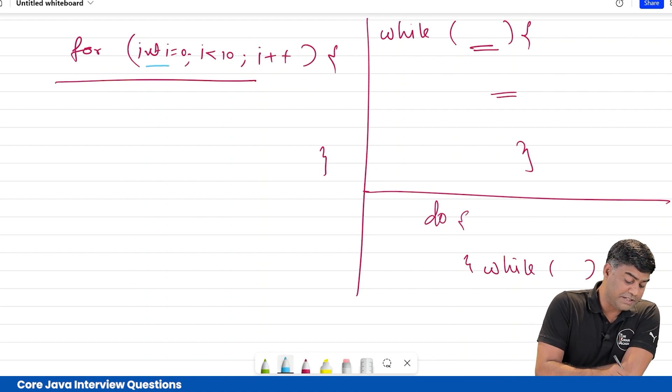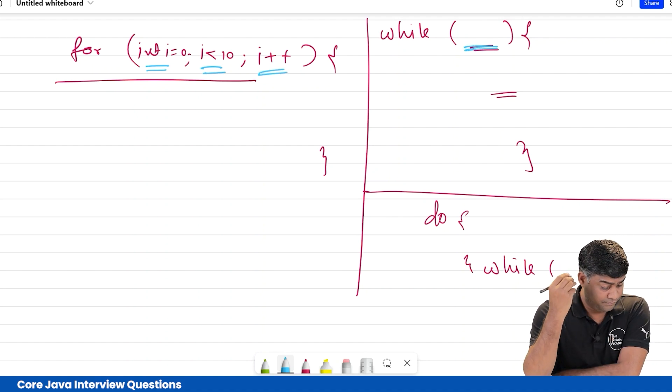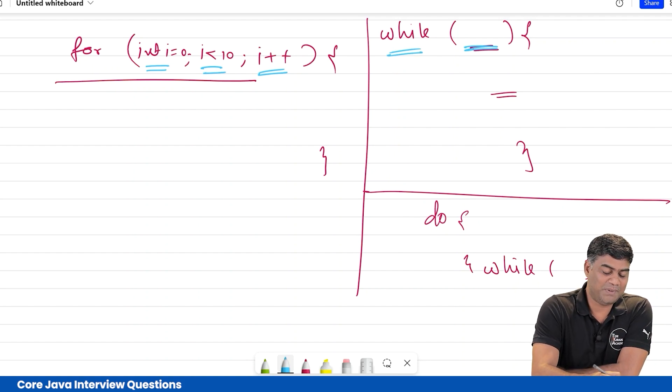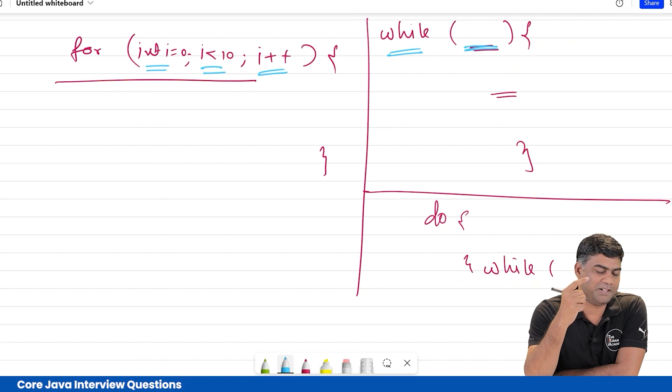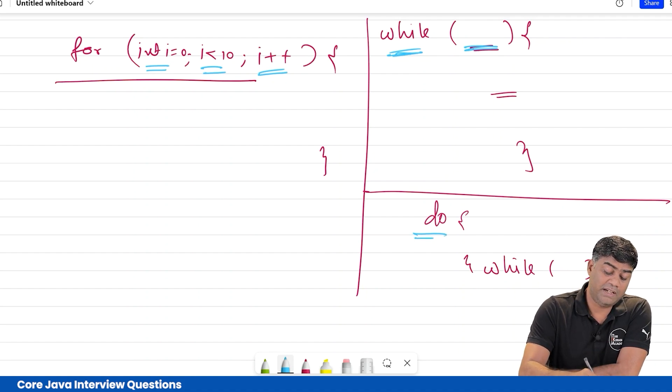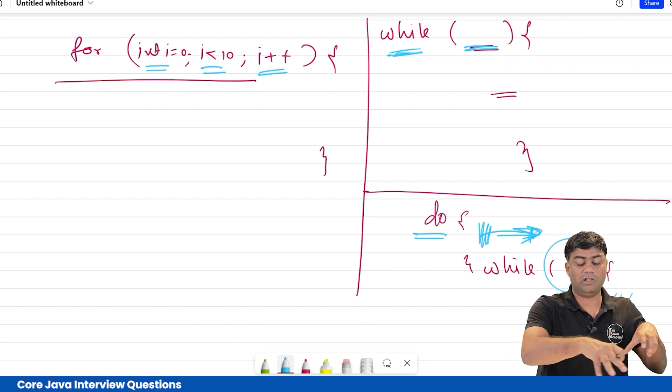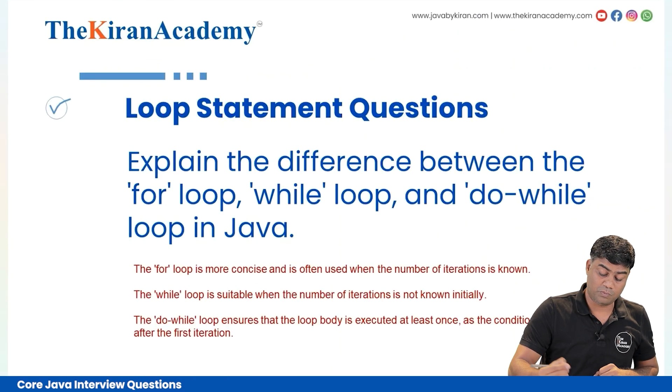In for loop, you have initialization at start, then condition, then increment. In while loop, you don't have initialization or increment. Why use while loop? Use while if you don't know how much to increment or what value to initialize. In do-while, whatever code you write doesn't have any condition - unconditional means this will execute always, but this code will always depend upon the condition.